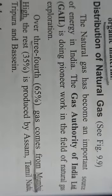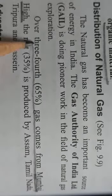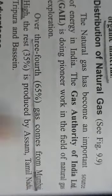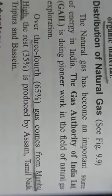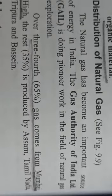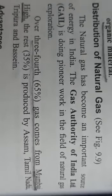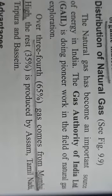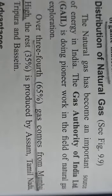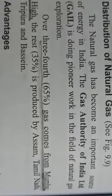Over three-fourths — that is 65% of the gas — comes from Mumbai High, which is an offshore oil field. The remaining 35% is produced by Assam, Tamil Nadu, Tripura and the Basin.